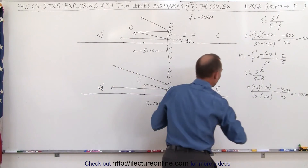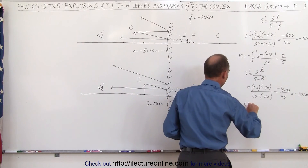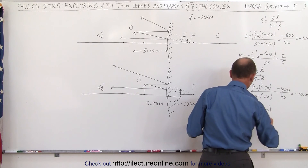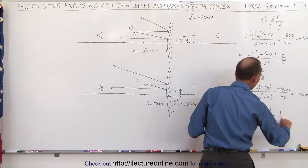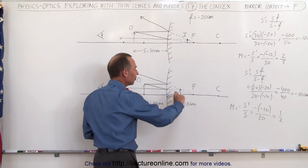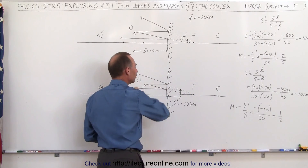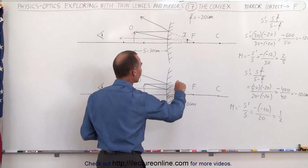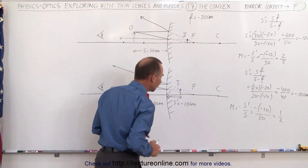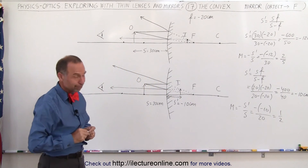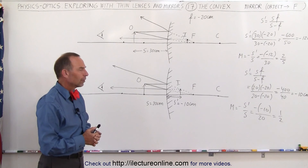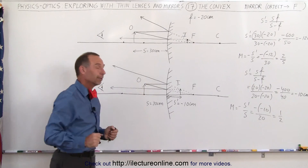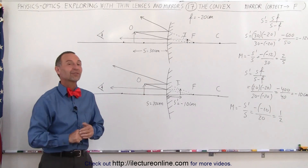Now for the magnification. The magnification equals minus S' over S — minus minus 10 over 20 — which is positive one half. The magnification is half the size of the original object, and since it's positive we know the image is upright. So the image is right here, halfway between the mirror and the focal point behind the mirror, making it a virtual image. In the next video we're going to see what happens as we bring the object closer and closer to the mirror, so stay tuned.